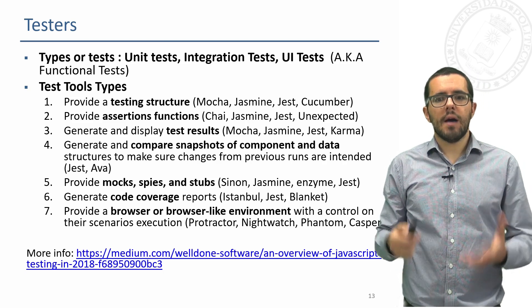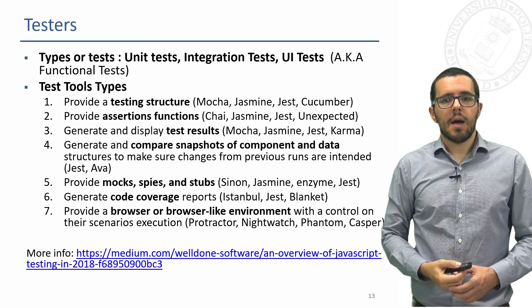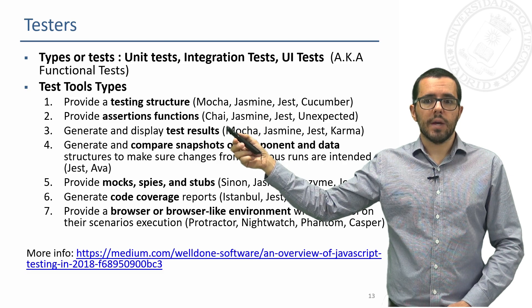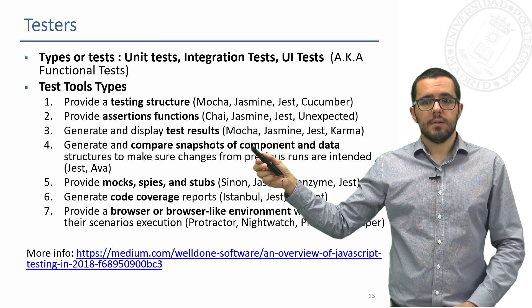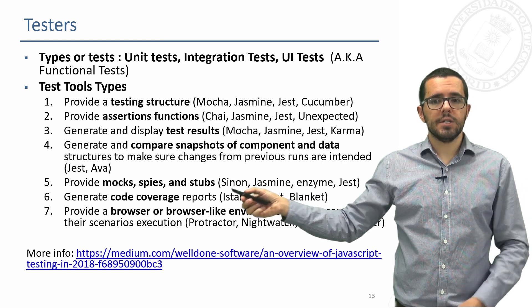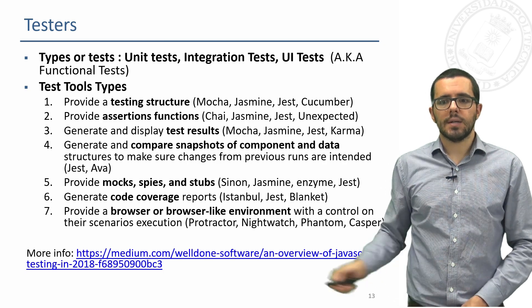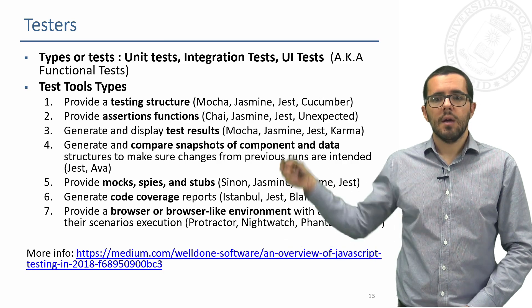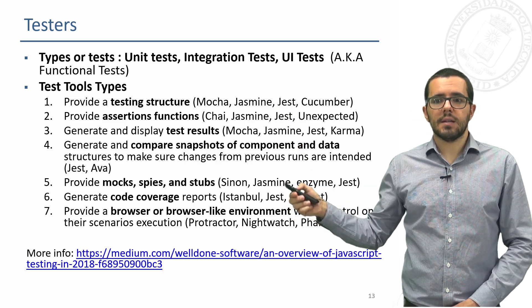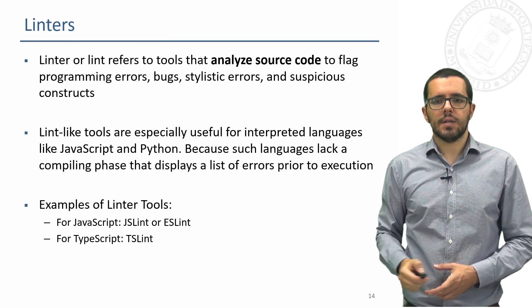Finally, testers. We will have many types of tests: unit tests, integration tests, and user interface tests also known as functional tests, plus many tool types. For example: tools to test the structure, to provide assertion functions, to render test results, to compare snapshots of components and data structures, to provide mocks or stubs, to see code coverage, or to provide a browser-like environment to test our application as if we were a user. We are going to use mainly Jest and Jasmine, mainly for JavaScript, but there are many options available for each language.